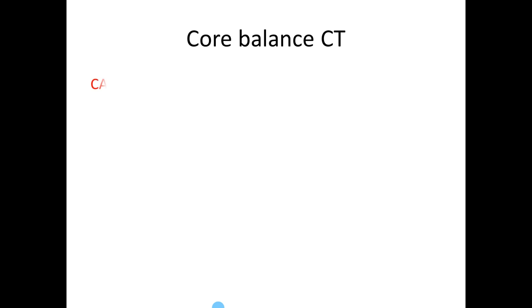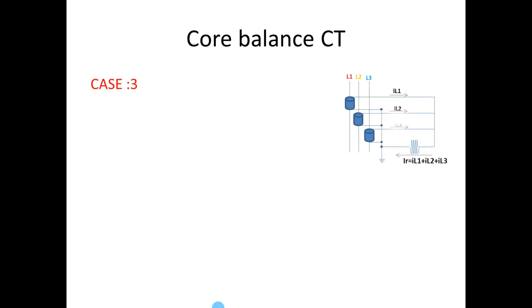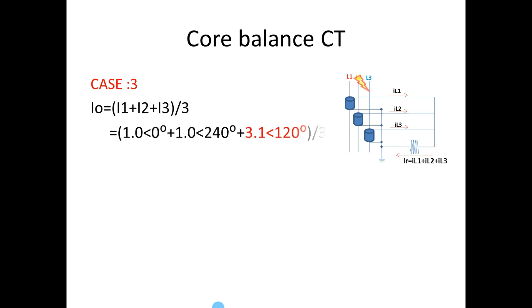For Case 3, considering the fault on B phase, the B phase fault current is 3.1A. The I0 current we get is 0.7A at 300 degrees or minus 60 degrees. We will note all three values.